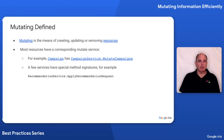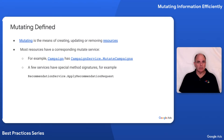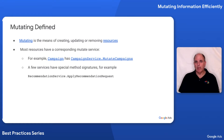Most resources have a corresponding Mutate service. For example, Campaign has the CampaignService.MutateCampaign method. With this method, you can create, update, or remove campaigns.